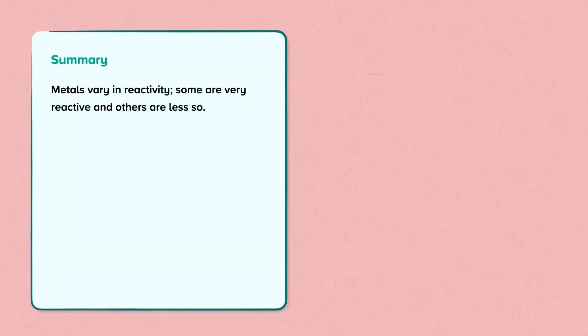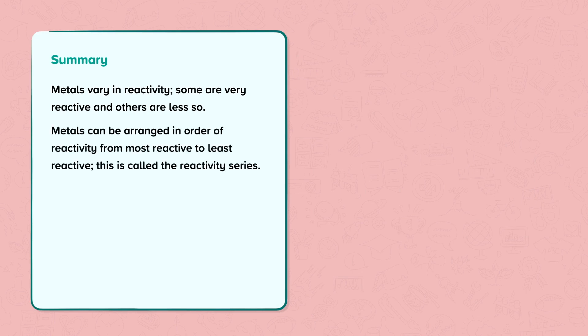Metals vary in reactivity. Some are very reactive and others are less so. Metals can be arranged in order of reactivity, from most reactive to least reactive. This is called the reactivity series.